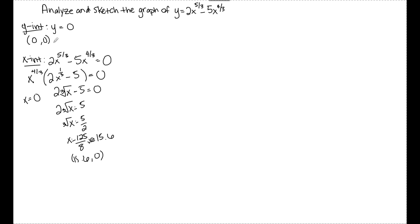Once I have the x and y intercepts, the next step is finding the first derivative. Remember, the first derivative tells us if the original function y is increasing or decreasing. Using the power rule: 5 times 2 gives 10/3, and subtracting 1 from 5/3 gives the exponent 2/3. Then 4/3 times 5 gives 20/3, and subtracting 1 from 4/3 gives the exponent 1/3. When solving for critical values, I need to find where y prime equals 0 and where y prime is undefined — don't forget that undefined piece.